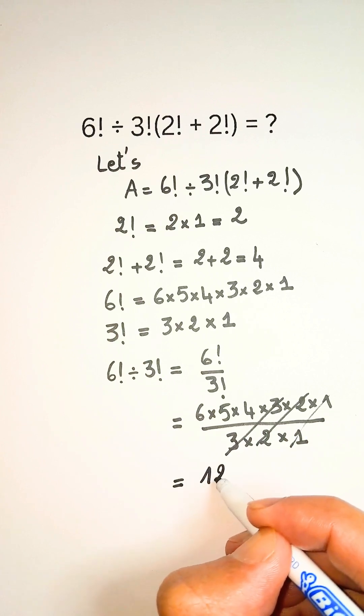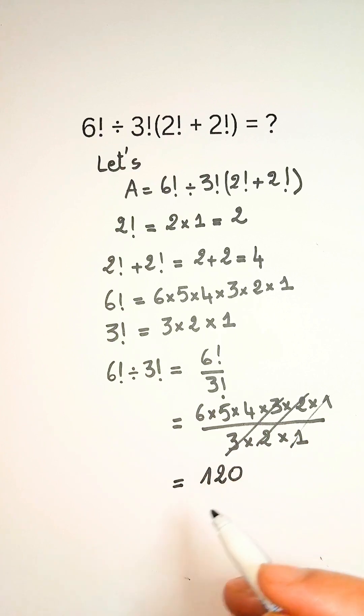So, 6 factorial divided by 3 factorial equals 120.